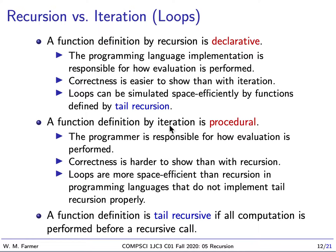Loops can be simulated space-efficiently by functions defined by tail recursion. Even if we have a programming language without loops, we can simulate them using tail recursion. A function is tail recursive if all computation is performed before the recursive call — we don't make a recursive call, get the value, and then add something to it. We do all our computation first, then make the recursive call last. That's why it's called tail recursive.